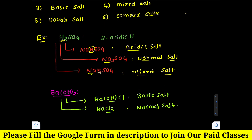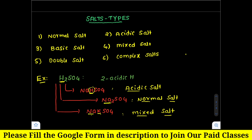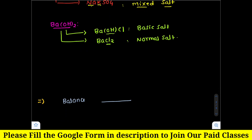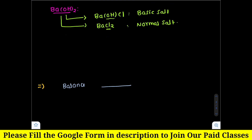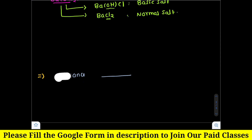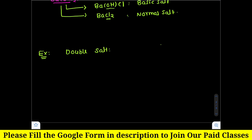So these are the examples of the first four categories: normal, basic, acidic, and mixed salts. Now let us see the fifth and sixth types — double salt and complex salt.